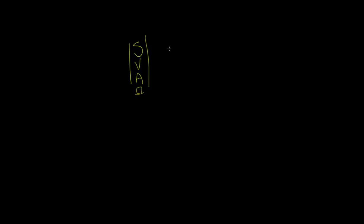So jumping back to what we talked about last class, we talked about the metric system. Basically, we have the standard column which is volts, amps, and ohms. And then to the right of that column there are two columns that we don't talk about. And then we have the milli column — millivolts, milliamps, and milli-ohms.